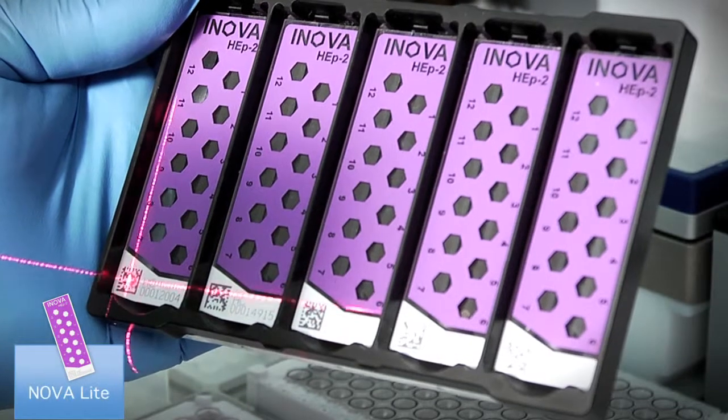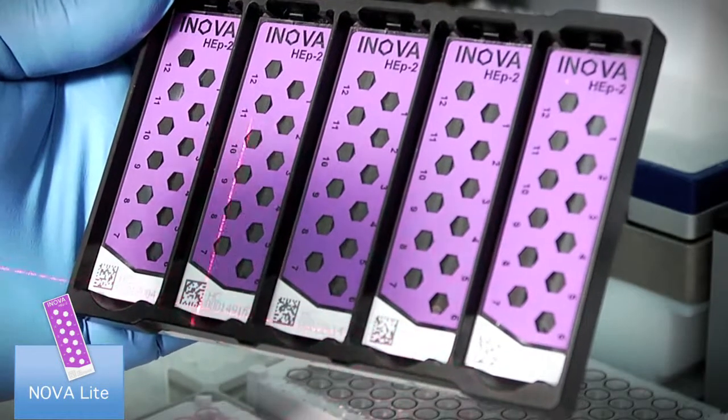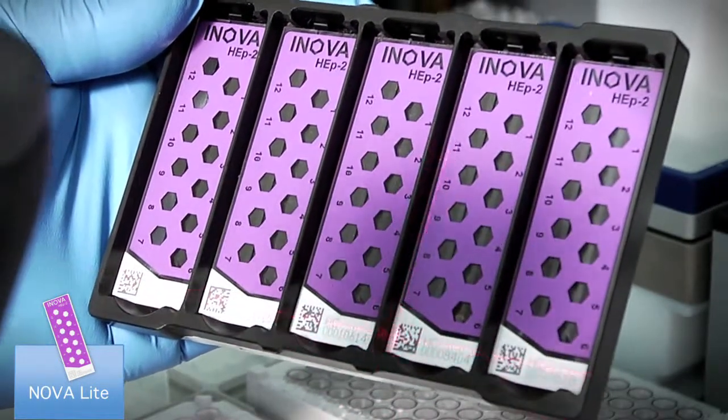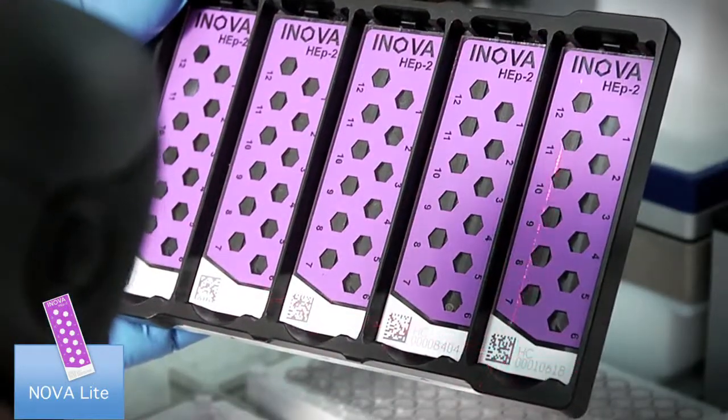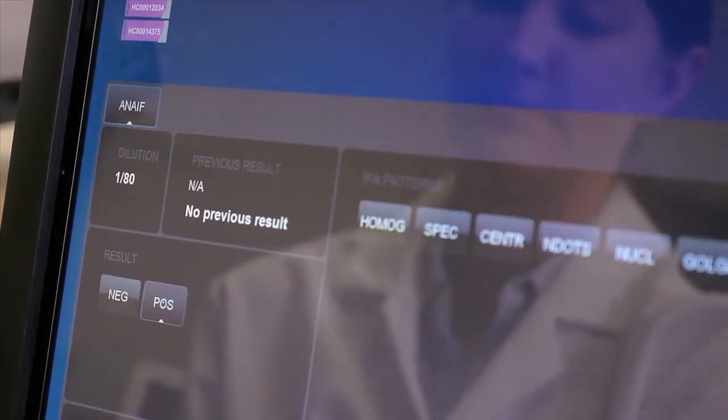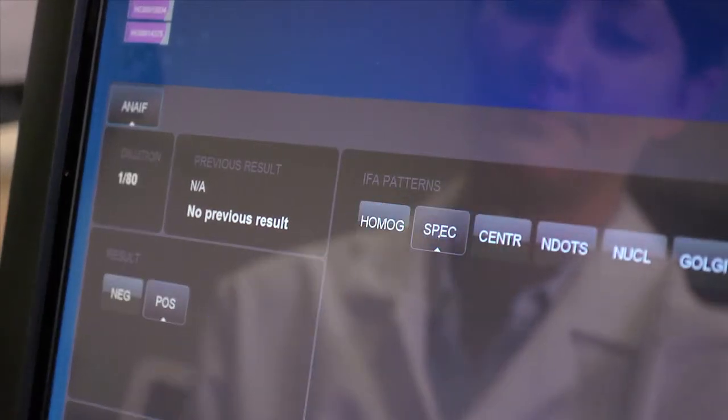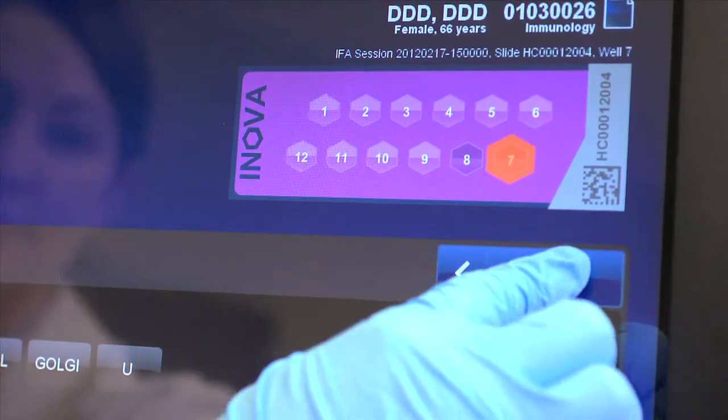For IFA testing, NovaLite barcoded slides deliver positive patient identification, further enhancing sample integrity. Quantilink also integrates labs with its easy-to-use input screen that creates a paperless environment to report results directly to the LIS.